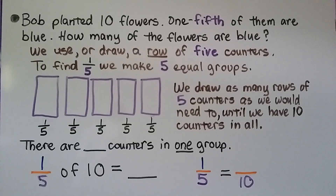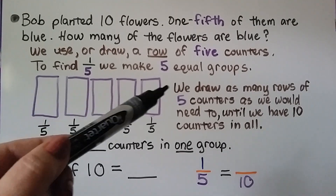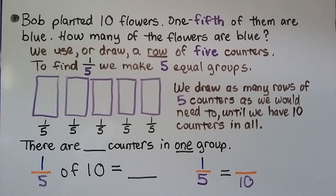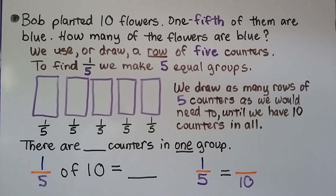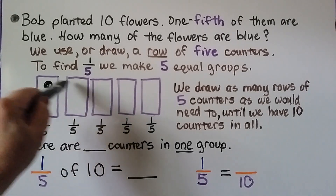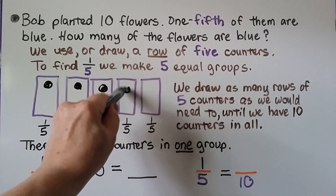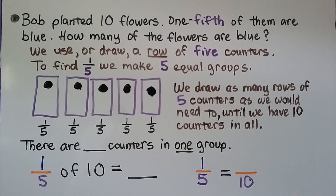Bob planted ten flowers, and one fifth of them are blue. How many of the flowers are blue? We use or draw a row of five counters. To find one fifth, we make five equal groups. We're going to draw a row of five counters going across: one, two, three, four, five. And then we do it again — we draw as many rows of five counters as we would need to until we have ten counters in all.